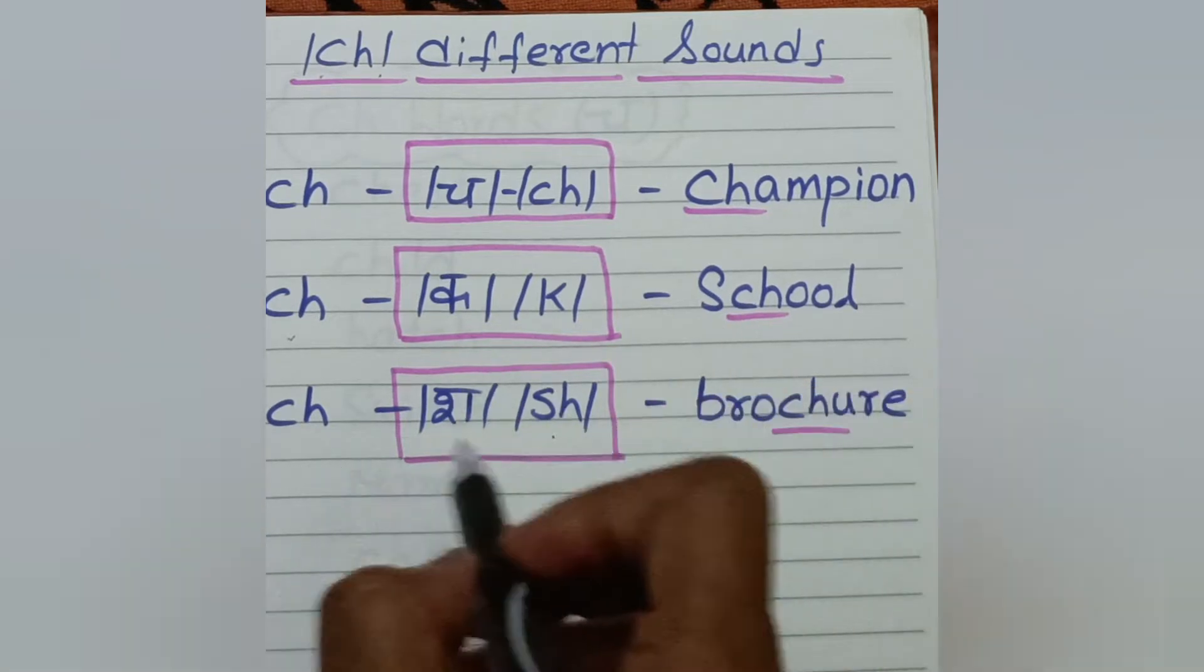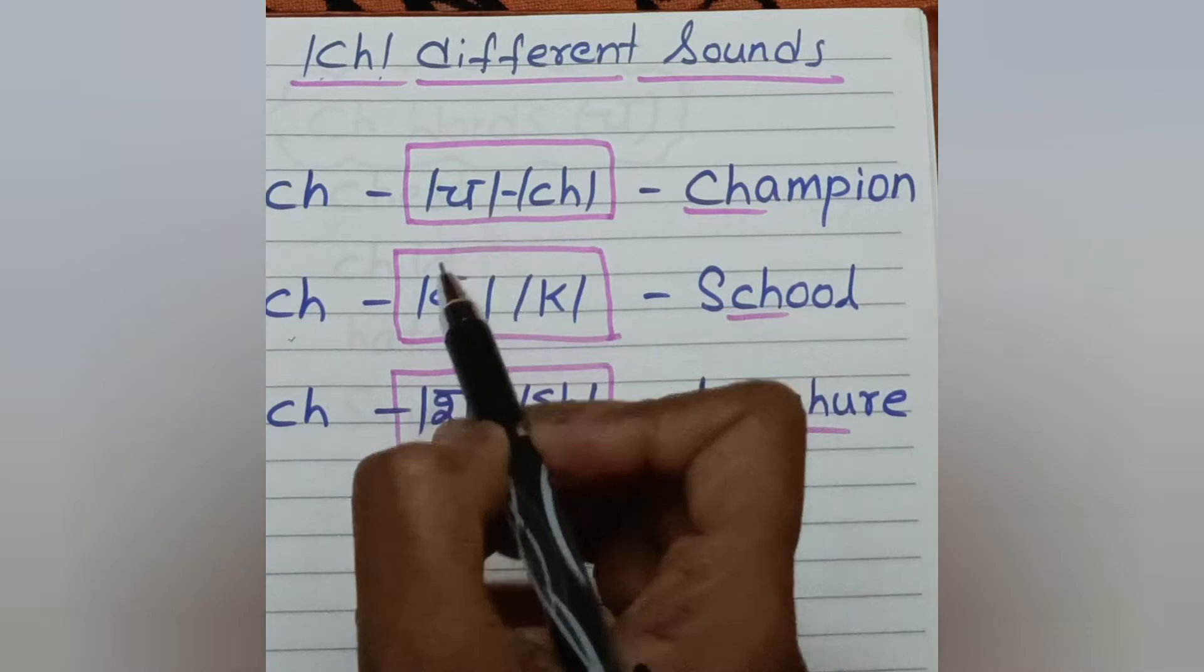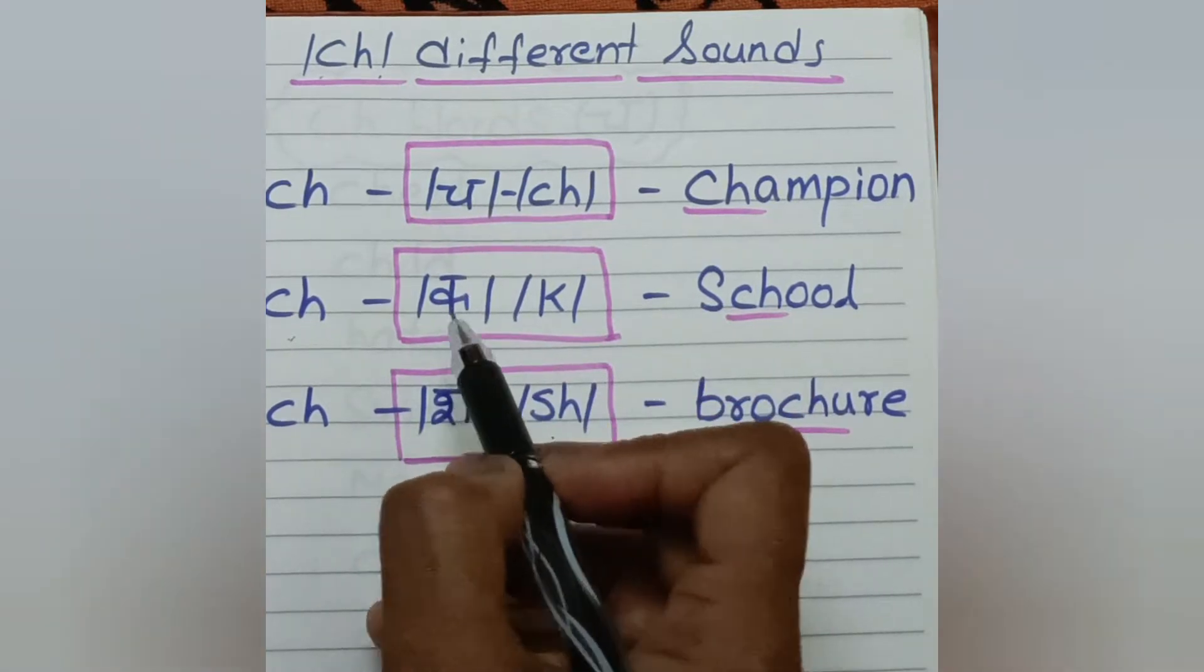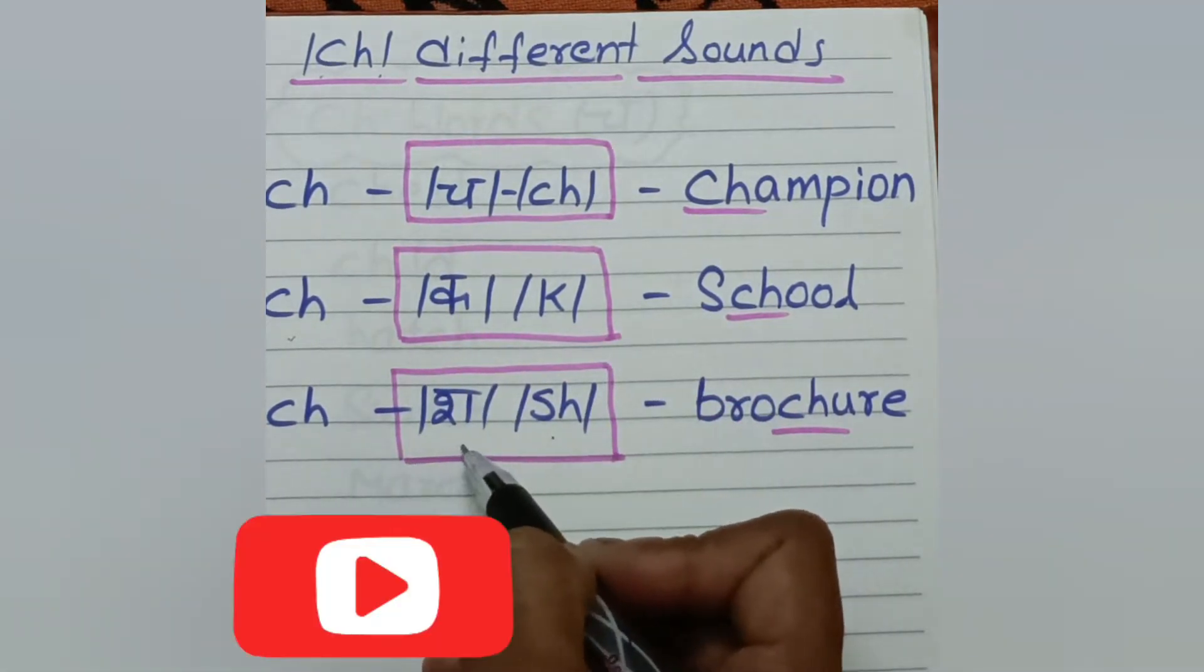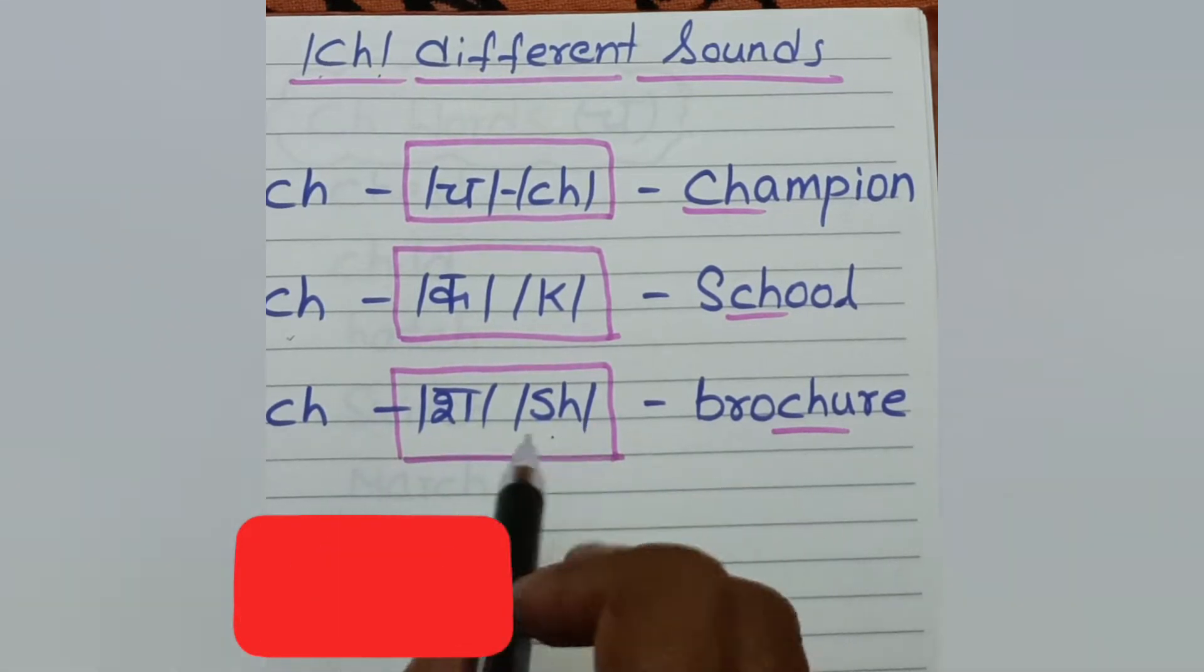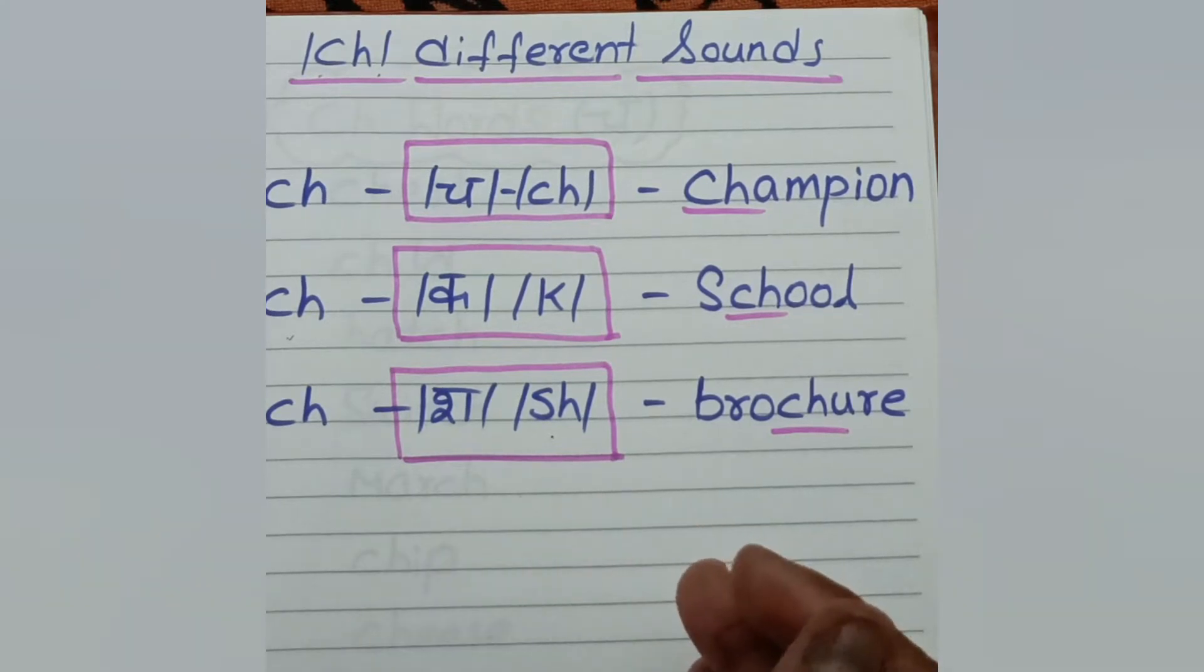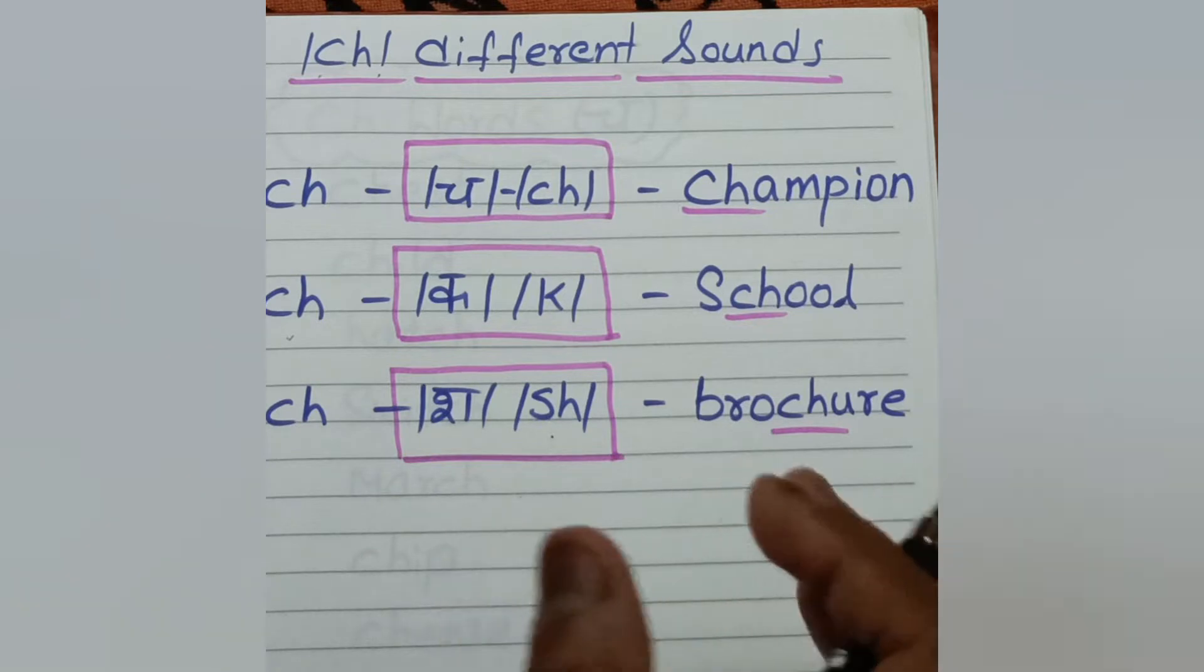So there are three different sounds. One is CH, second one is K, and third one is SH. There is no specific reason why there are three sounds. But CH is the common sound which we use in maximum words.